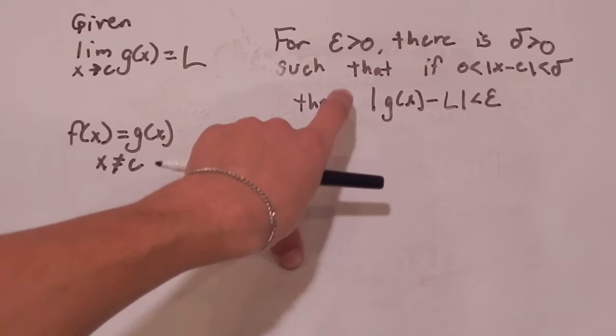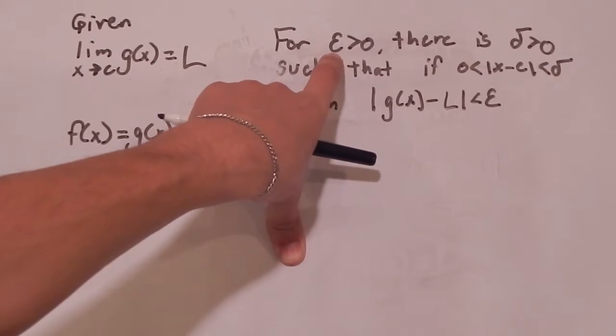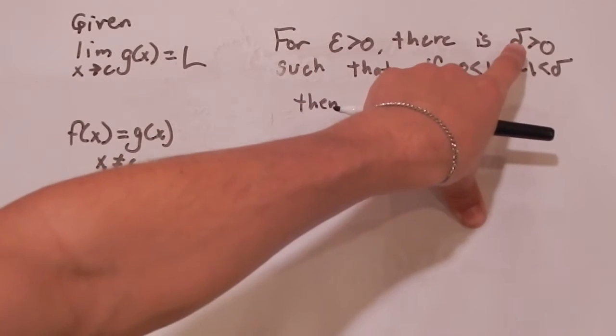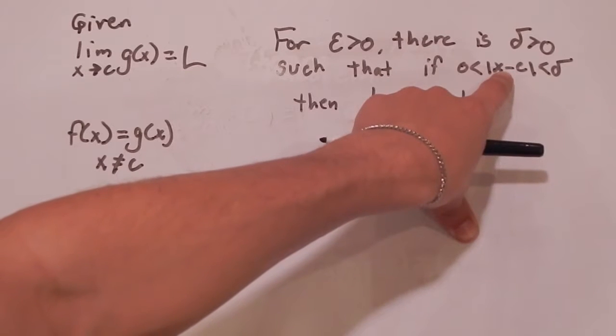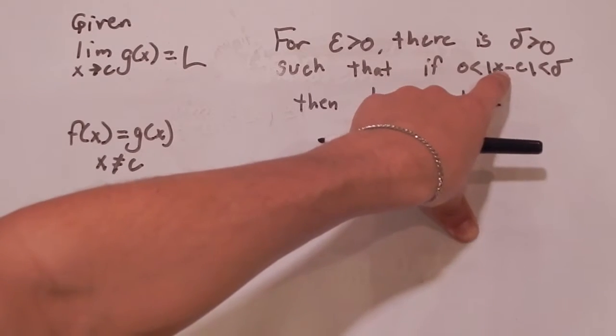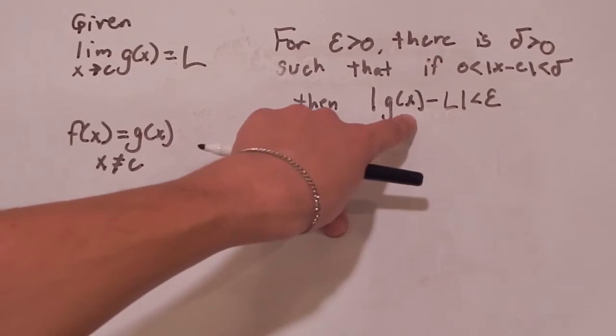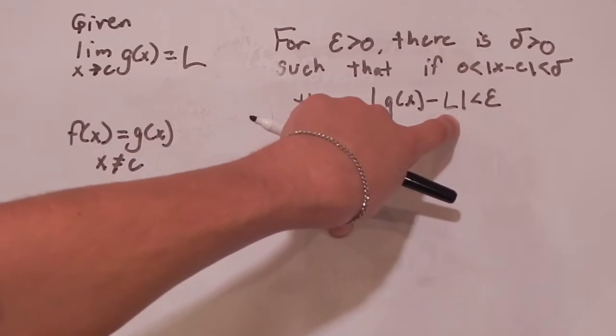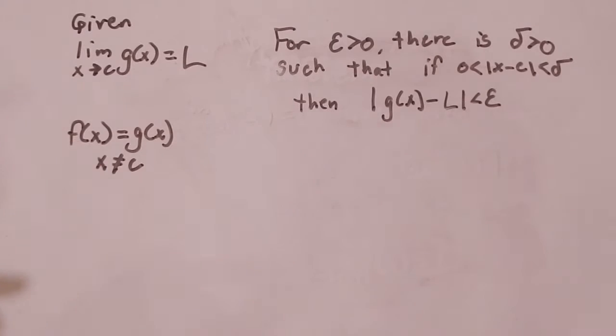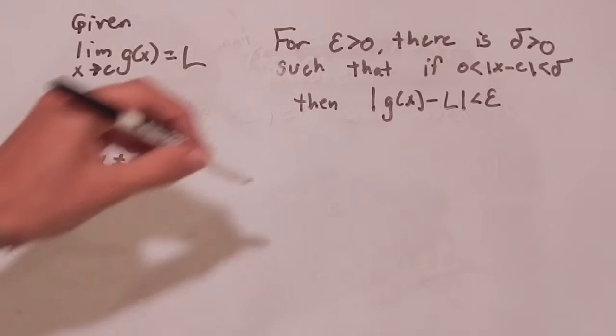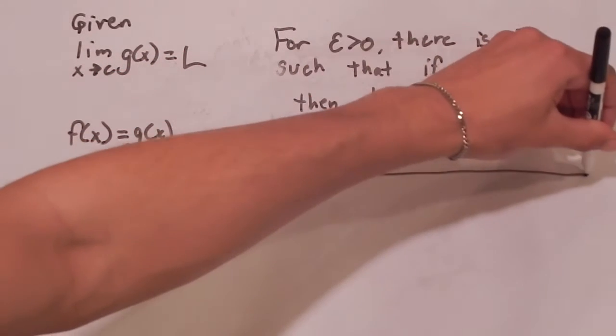So this is saying that whenever we're given an epsilon value, we can find another delta value such that when X falls within an interval around C that is defined by delta, then G of X falls within an interval around L defined by epsilon. And saying it is kind of confusing, so we're going to sort of draw it out with a number line.